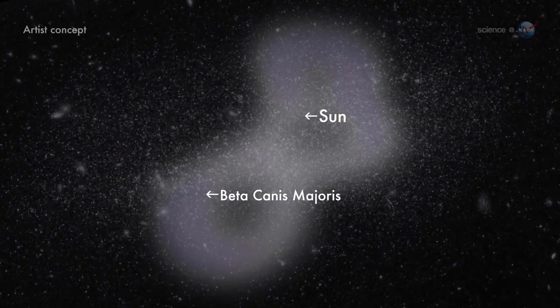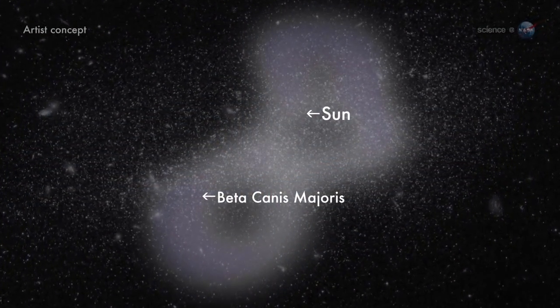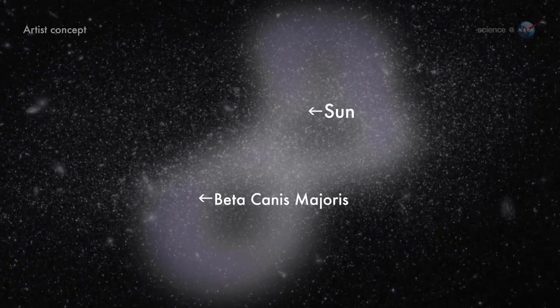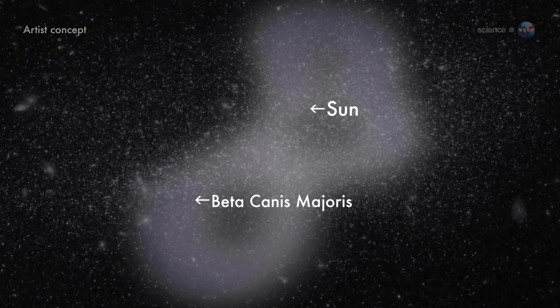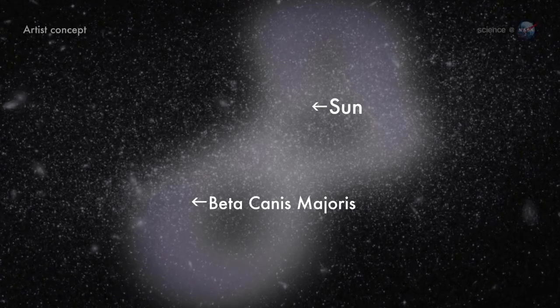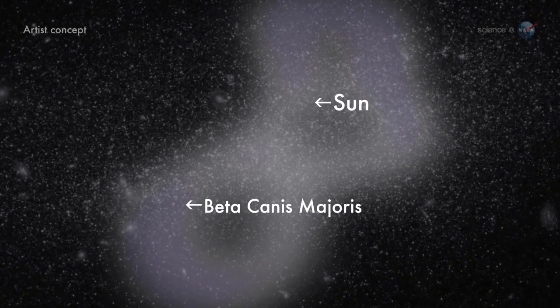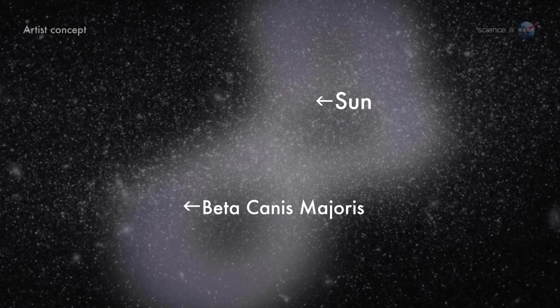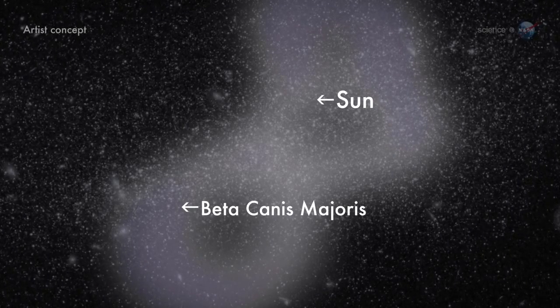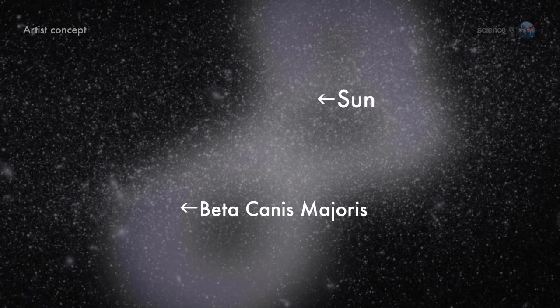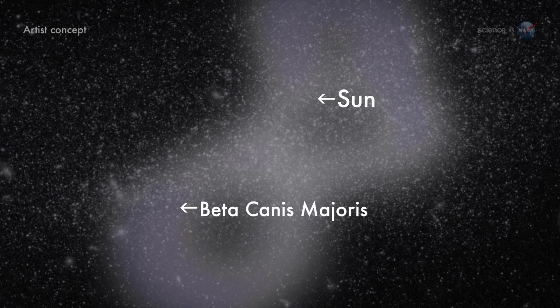Astronomers call it the local bubble. It is peanut-shaped, about 300 light-years long, and filled with almost nothing. Gas inside the bubble is very thin, 0.001 atoms per cubic centimeter. And very hot. Roughly a million degrees. A sharp departure from ordinary interstellar material.